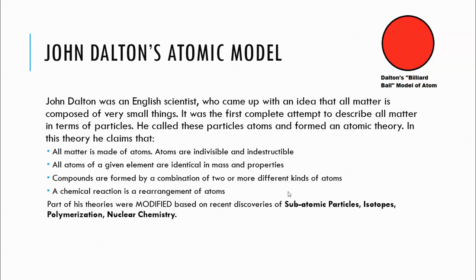Dalton was an English scientist who came up with the idea that all matter is composed of very small things. It was not Dalton who first mentioned the word 'atom' — it was Democritus. Democritus was thinking about cutting something, and he reasoned that if you keep cutting, you'd reach a point where it was uncuttable. In Greek, 'atomos' means uncuttable, and from there came the word atom.